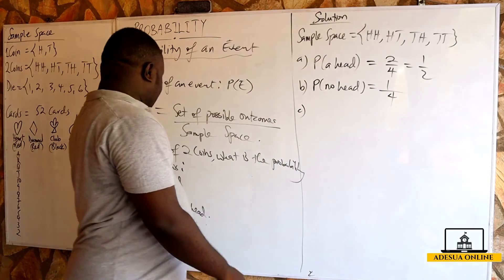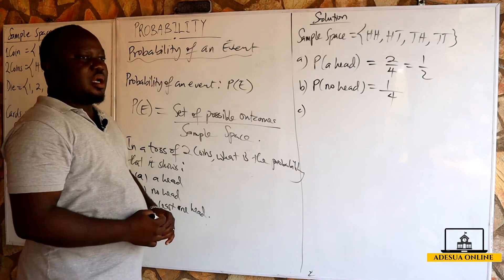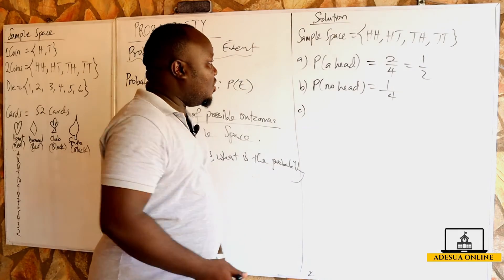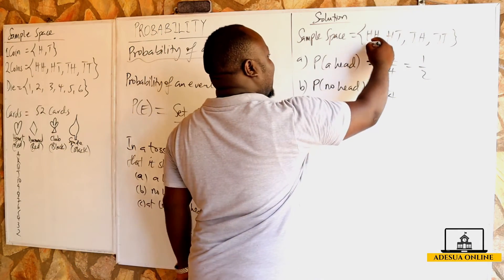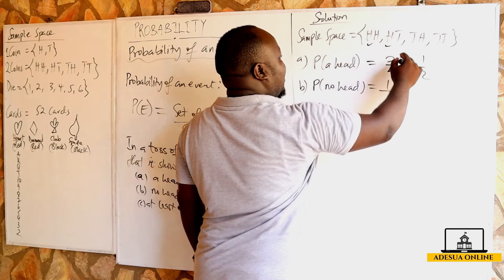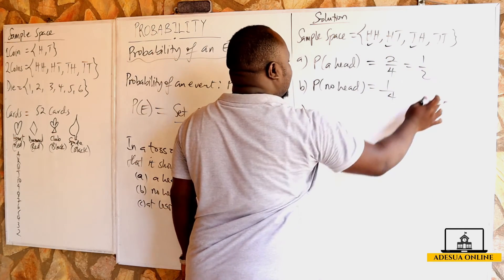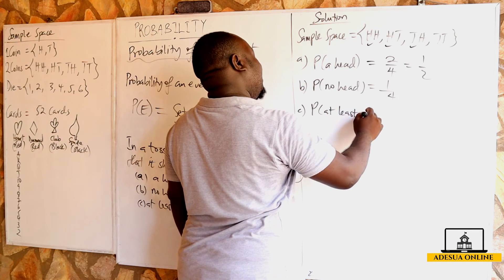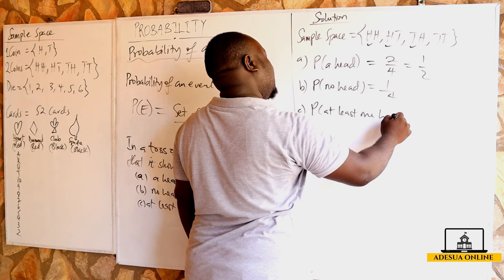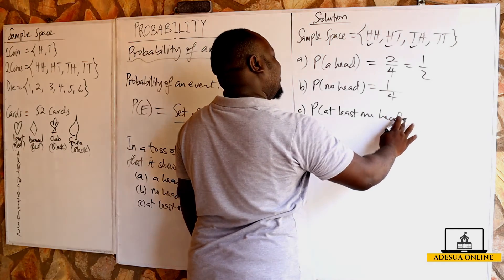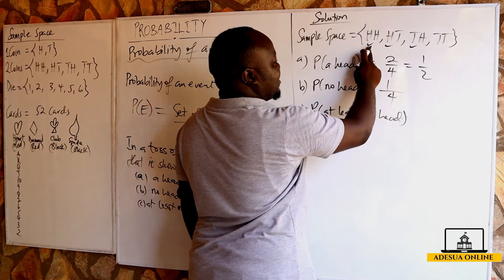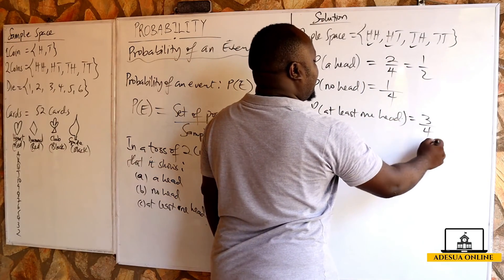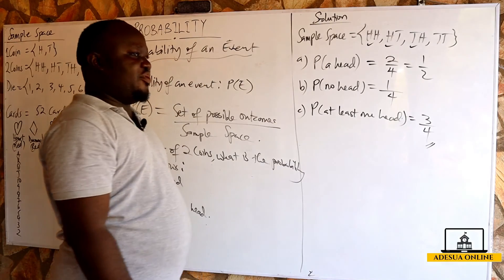And then the last one: at least one head, meaning one or more heads. At least one head — HH counts, HT also counts, and TH also counts. Tail-tail is out. So the probability of at least one head is equal to 3 over the sample space 4, giving us 3 over 4.